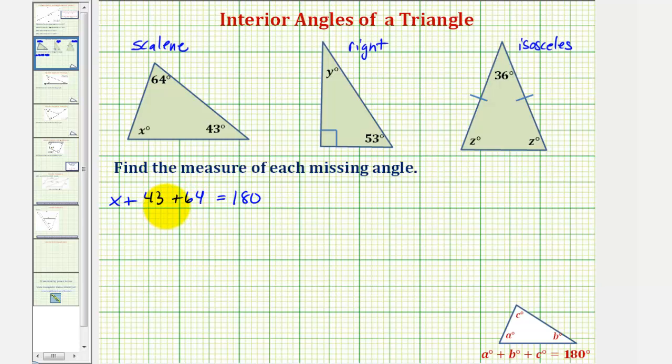Forty-three plus sixty-four equals one hundred seven. So we have x plus one hundred seven equals one hundred eighty. And now we'll subtract one hundred seven from both sides to solve for x. So we have x equals seventy-three, which means the missing angle measures seventy-three degrees.